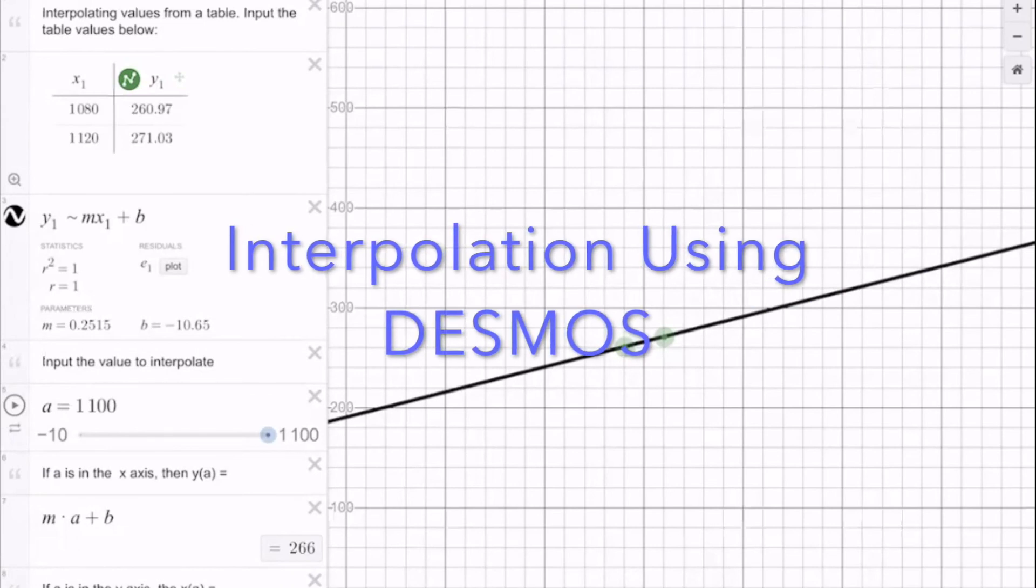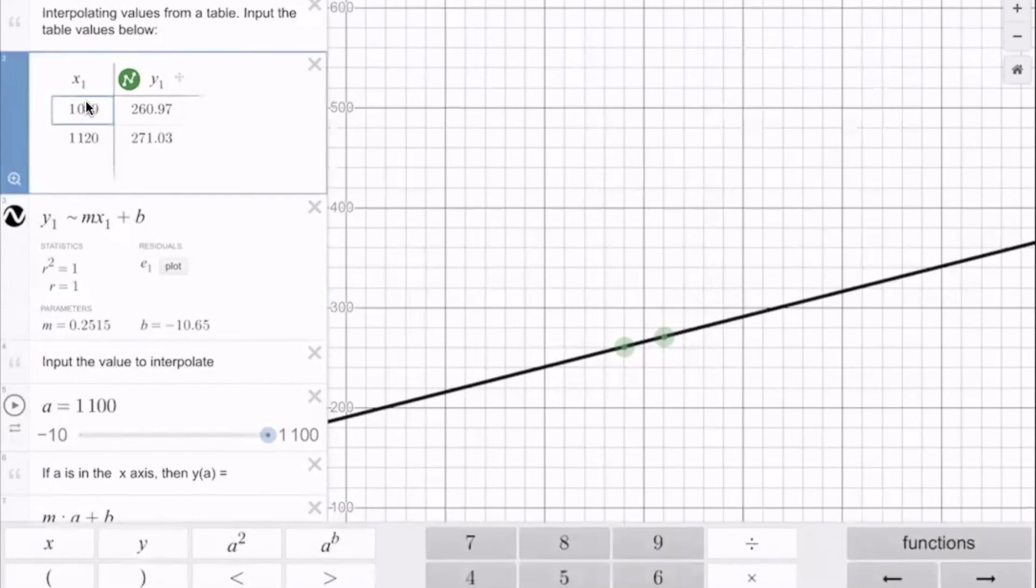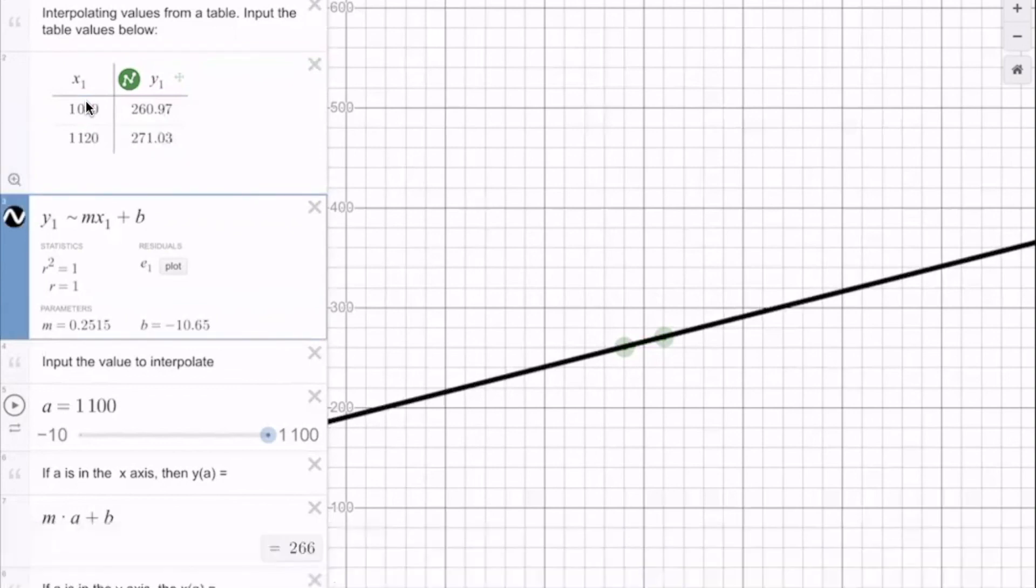The third alternative is to use Desmos. What I did in Desmos was a little table here in which you input the value. You can interactively put the values of the table, you only need the two points, the one before and the one after. You can modify for whatever value that you have. In this case I already put the values in the table x1 and y1 and x2 and y2. This will calculate the equation of the straight line, we have here the slope.